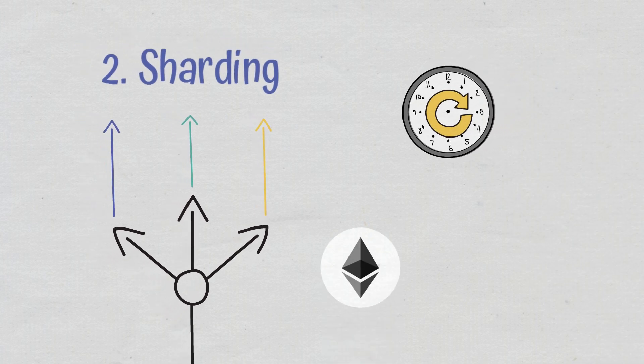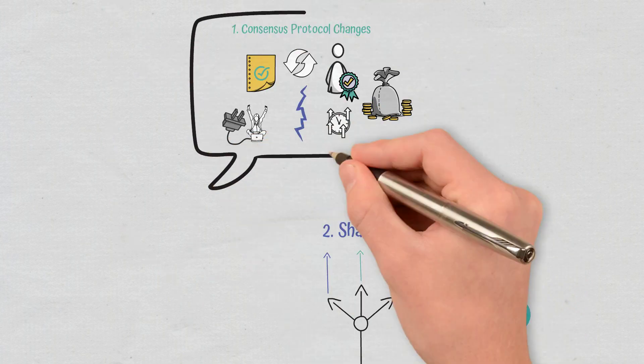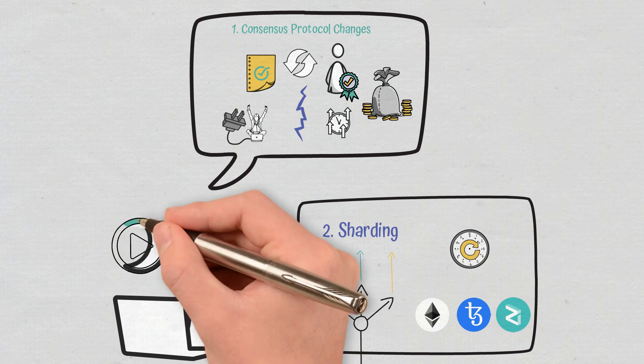Ethereum 2.0, Tezos, and Zilliqa are exploring the use of shards. You can find out more about proof-of-stake and sharding in our videos on these topics.